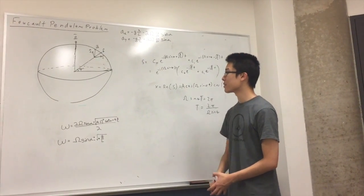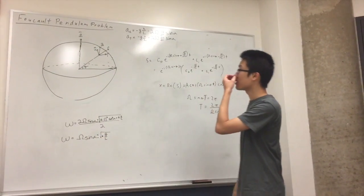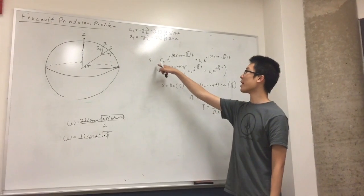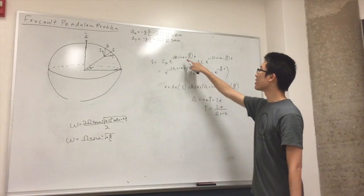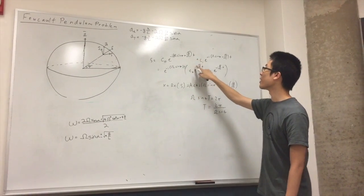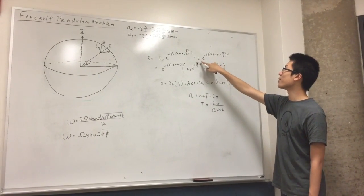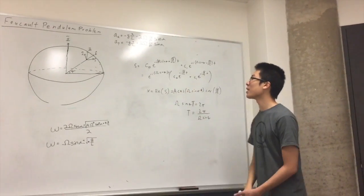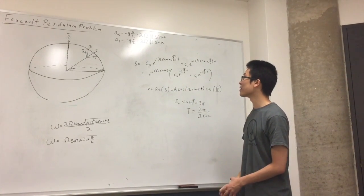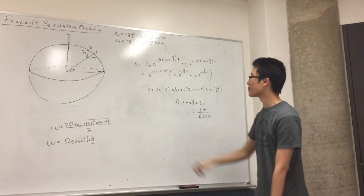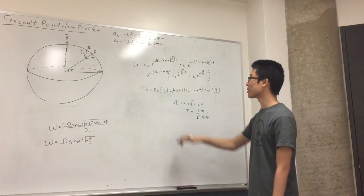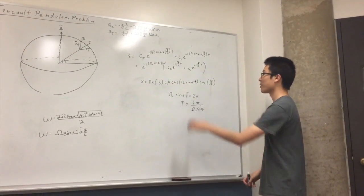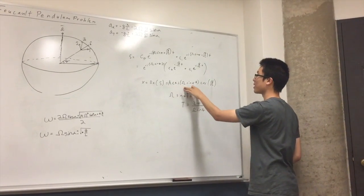To finish up this solution: there are two possible solutions for omega, so s is going to be some combination of both. We have s equals c₀ times e to the negative i times (Omega sine(alpha) plus root g over l) times t, plus c₁ times e to the negative i times (Omega sine(alpha) minus root g over l) times t. We can factor out e to the negative i Omega sine(alpha) t. To find the period, we can look at the x component — we just take the real part of s, which means taking the cosine of the entire expression.